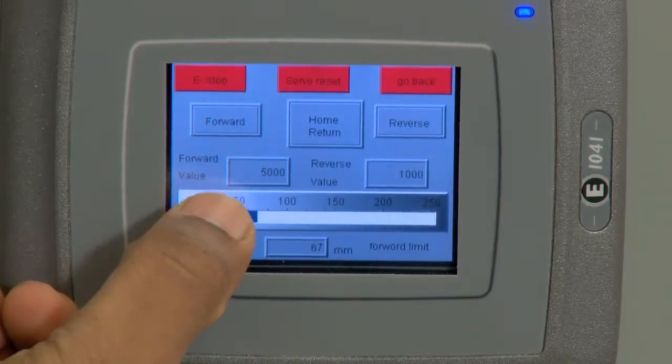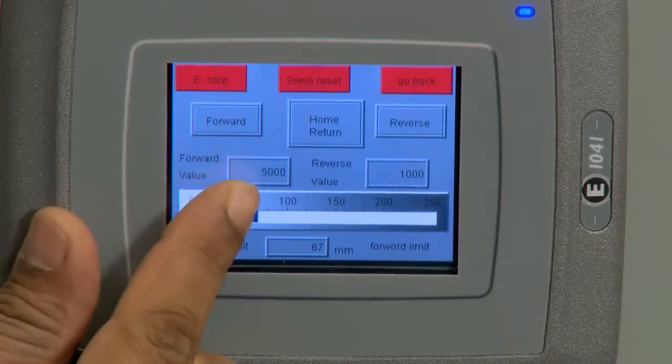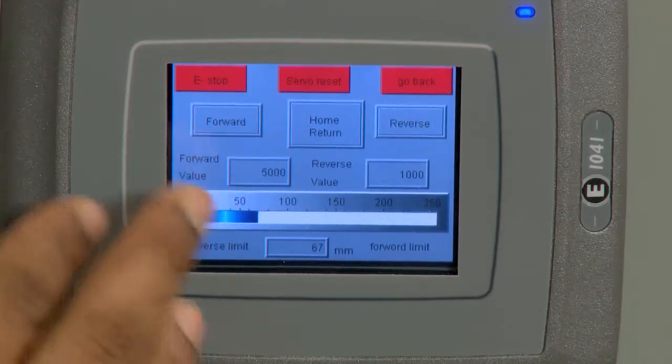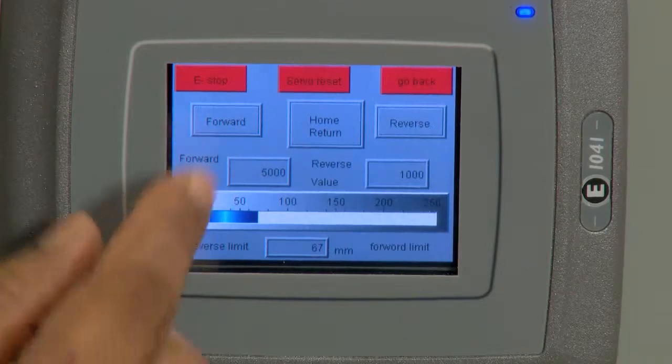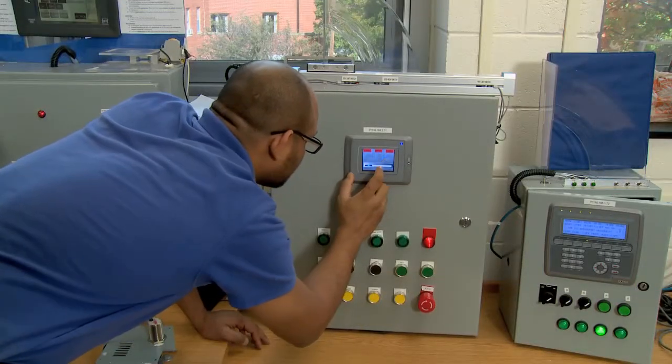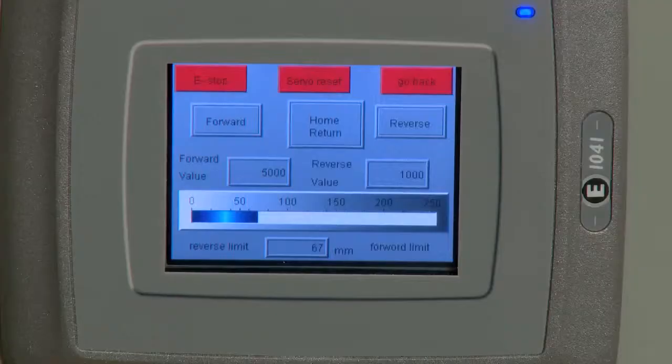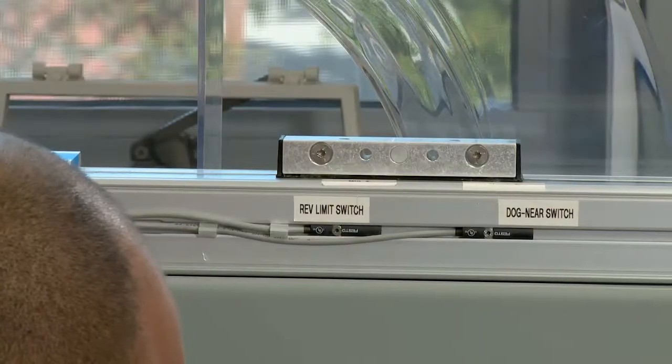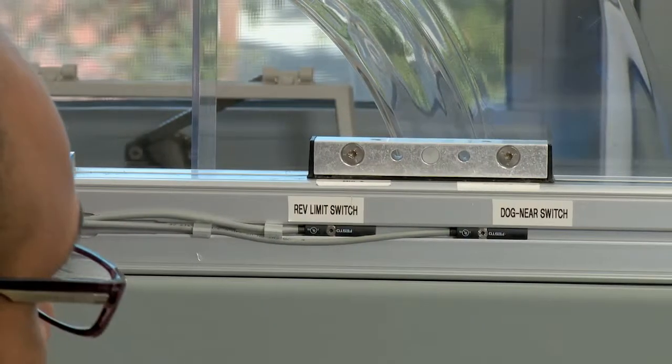If we take a look at the screen right now, it says 5000, which means if I press the forward button, the motor is going to receive 5000 pulses and it's going to move in steps of 5000, which essentially translate linearly into some distance.